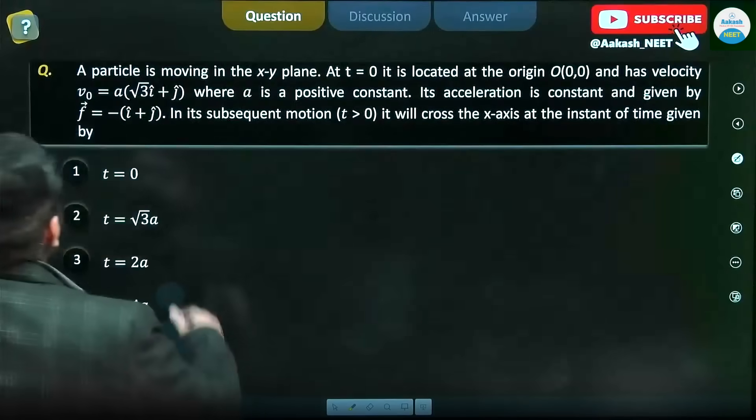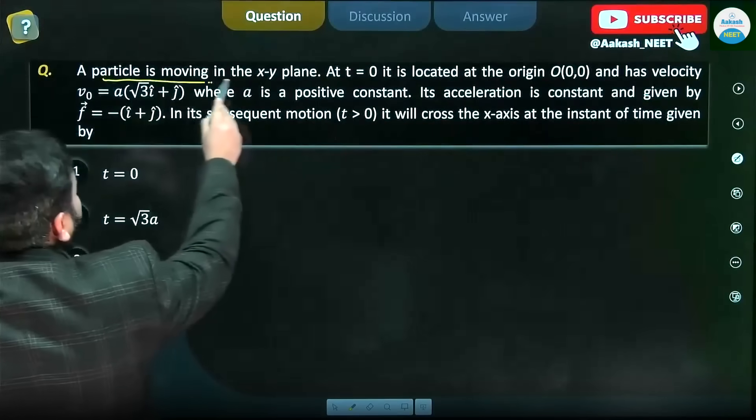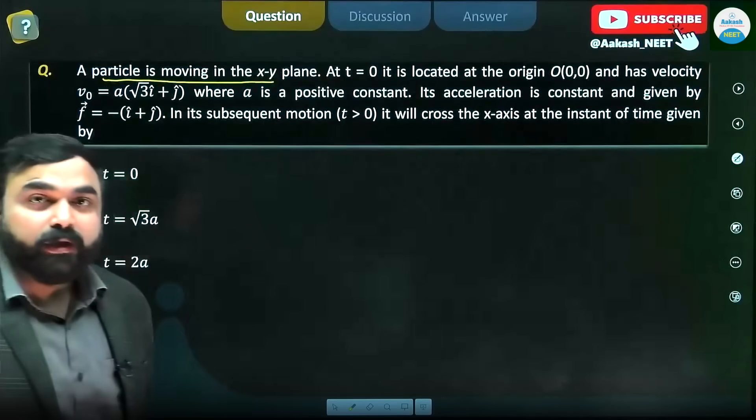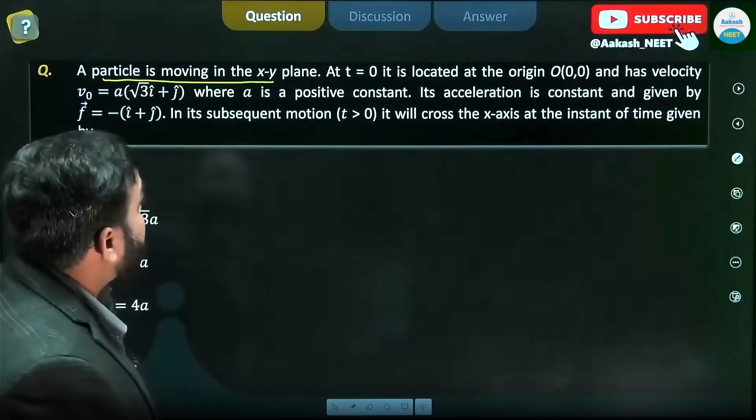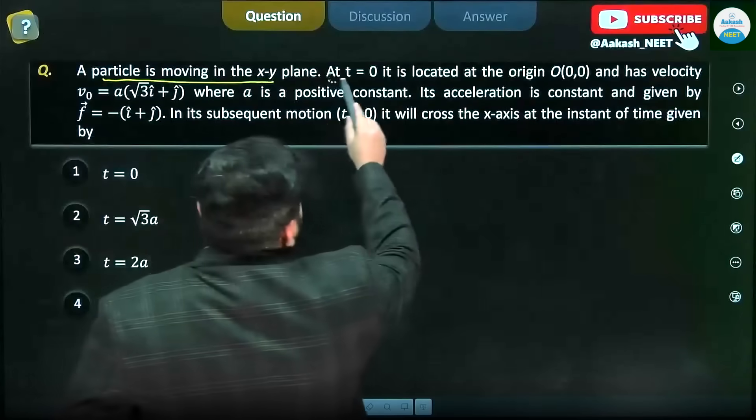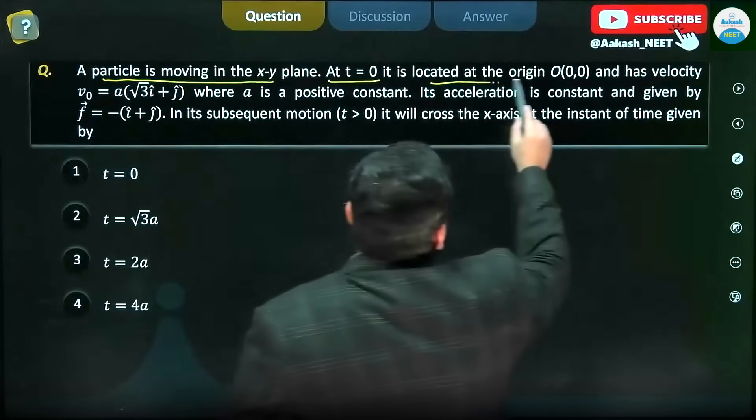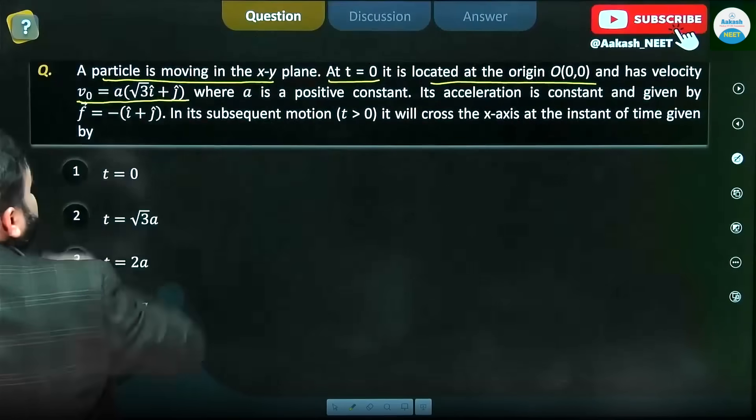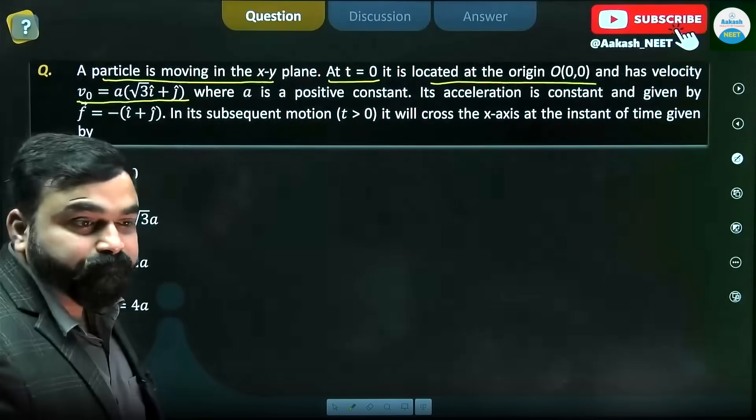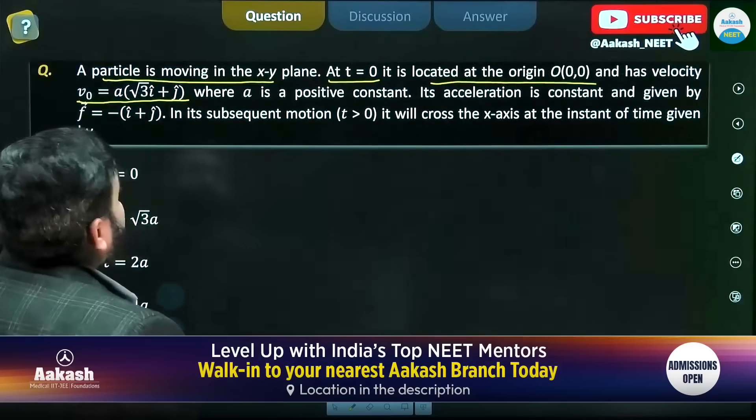So here what is happening: we have a particle that is moving in the xy-plane. At t = 0, it is located at the origin O(0,0) and has velocity v₀ = a(√3i + j), where a is a positive constant. This is the initial velocity of the particle.